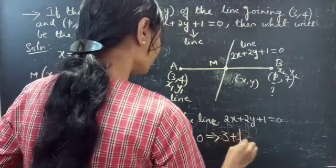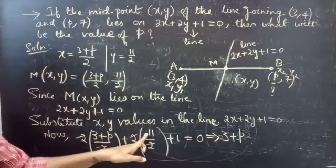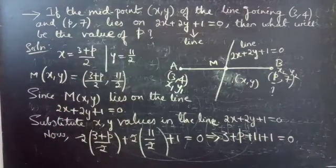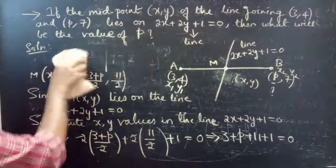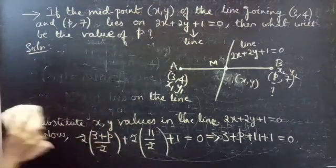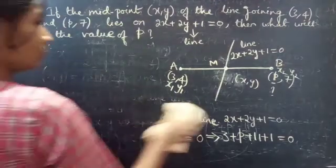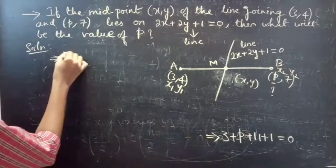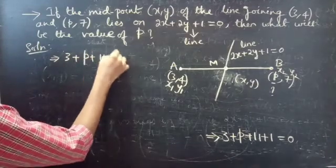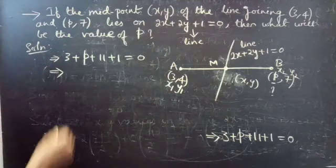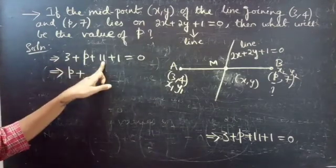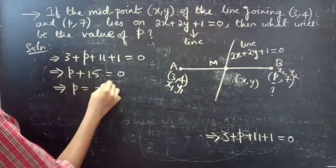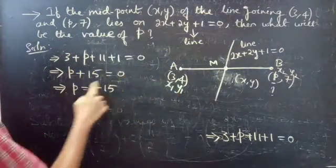We get 3 plus P plus 11 plus 1 equals to 0. This implies P plus 3 plus 11 — that is 14 — plus 1, giving us P plus 15 equals to 0. From this, taking 15 to the right-hand side, we get P equals to minus 15.